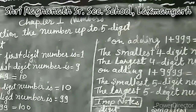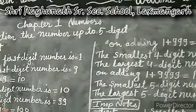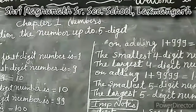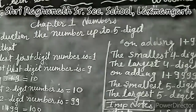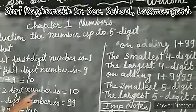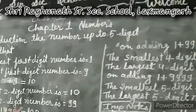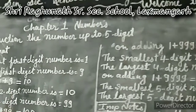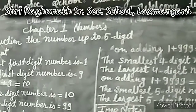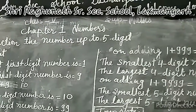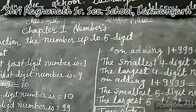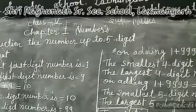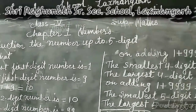Ten is the smallest two-digit number. Ninety-nine is the largest two-digit number. So, 99 plus 1 gives us 100. One hundred is the smallest three-digit number. You can know that the smallest number of three digits starts from 100.